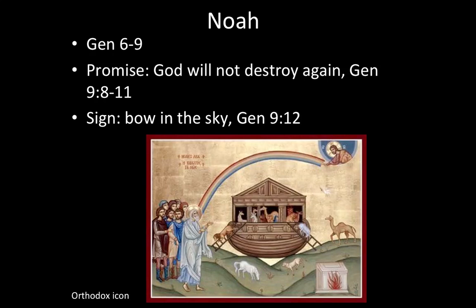Here also is an Orthodox icon showing that moment of the covenant relationship and the sign having been produced. You'll notice in the bottom right is an altar. One of the human responses we always see in the Old Testament is the building of an altar and making a sacrifice. This is such a prominent theme — almost an automatic response among the patriarchs. As soon as a divine encounter of some sort happens, the response of the human is to make a sacrifice, to offer something back to God. The Orthodox tradition has wonderfully picked that up with the image of the altar.